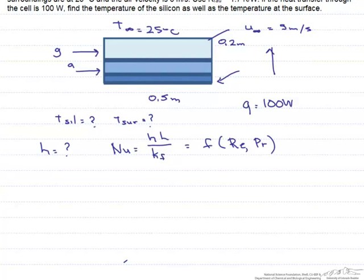We can look up the Prandtl number, but the first thing that we're going to have to do is solve for the Reynolds number. And in order to do that, we're going to have to look up properties at the film temperature.